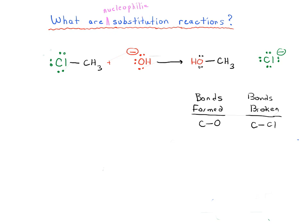There is only one bond formed and one bond broken. This is the mark of a substitution reaction — when you notice that we've broken and formed one bond on this carbon. This makes it a substitution reaction when you're swapping the bonds on carbon.